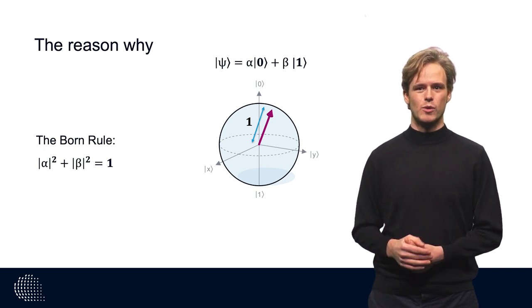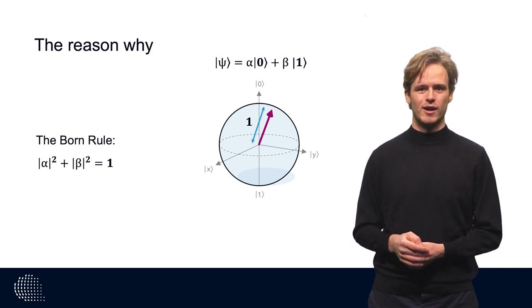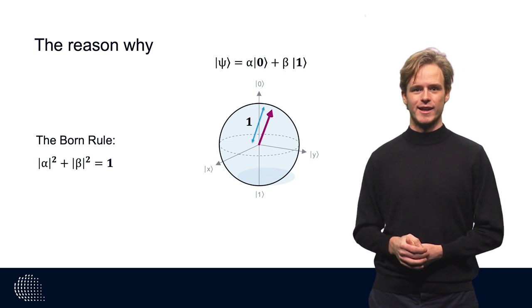So we can see that every pure state vector psi has exactly length 1. And this is the reason why we can represent any qubit on a unity sphere, aka the Bloch Sphere.